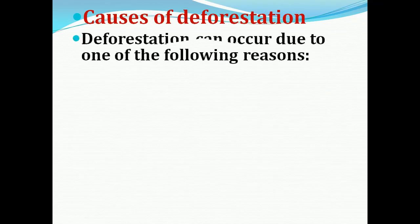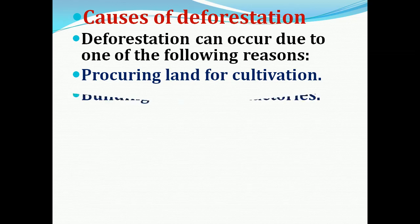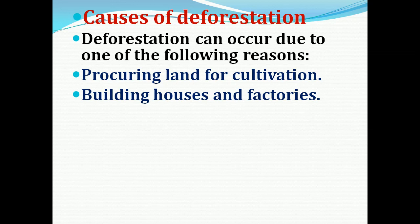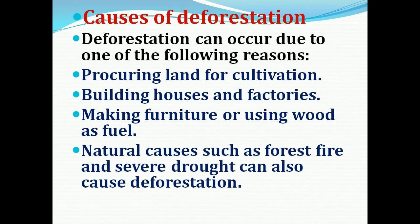Causes of deforestation: deforestation can occur due to some of the following reasons. The first one is procuring land for cultivation — cutting trees to cultivate crops. Next is building houses and factories, using trees from the forest to make furniture and build houses and factories. Another reason is making furniture or using wood as fuel. Natural causes such as forest fire and severe drought can also cause deforestation.